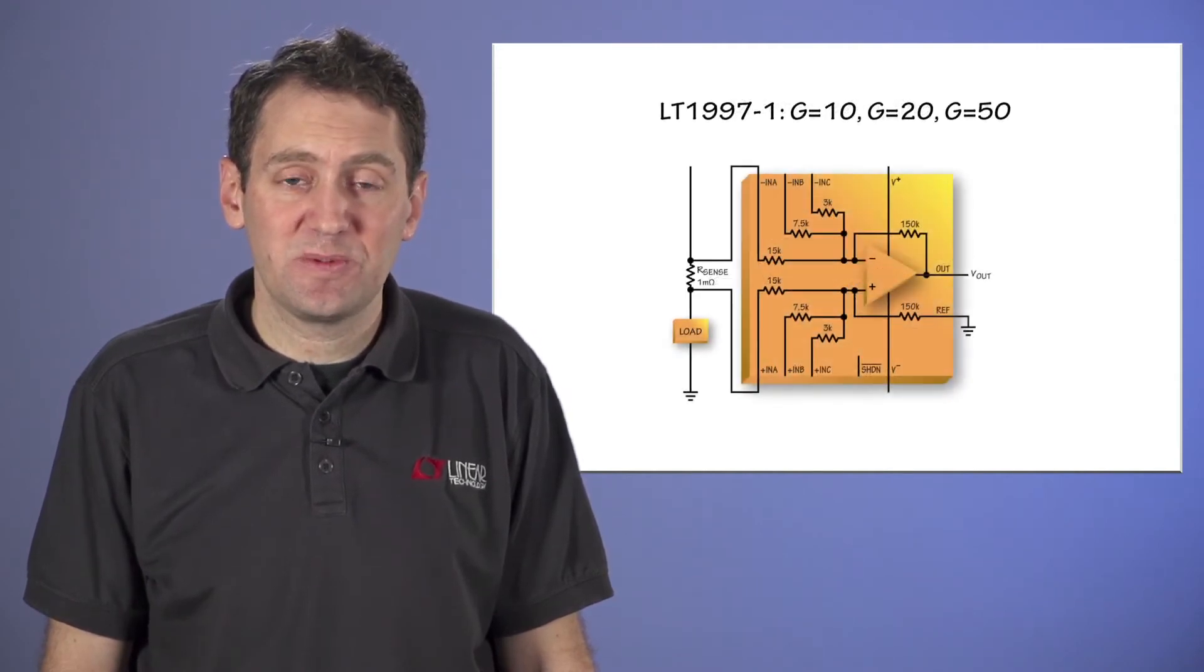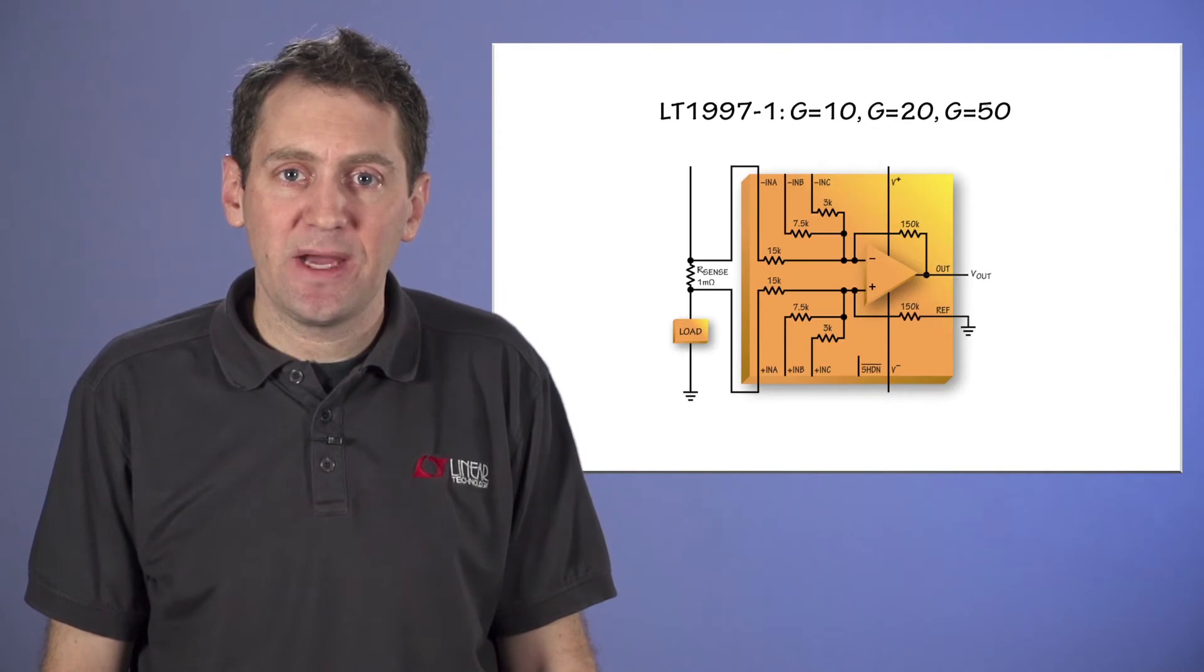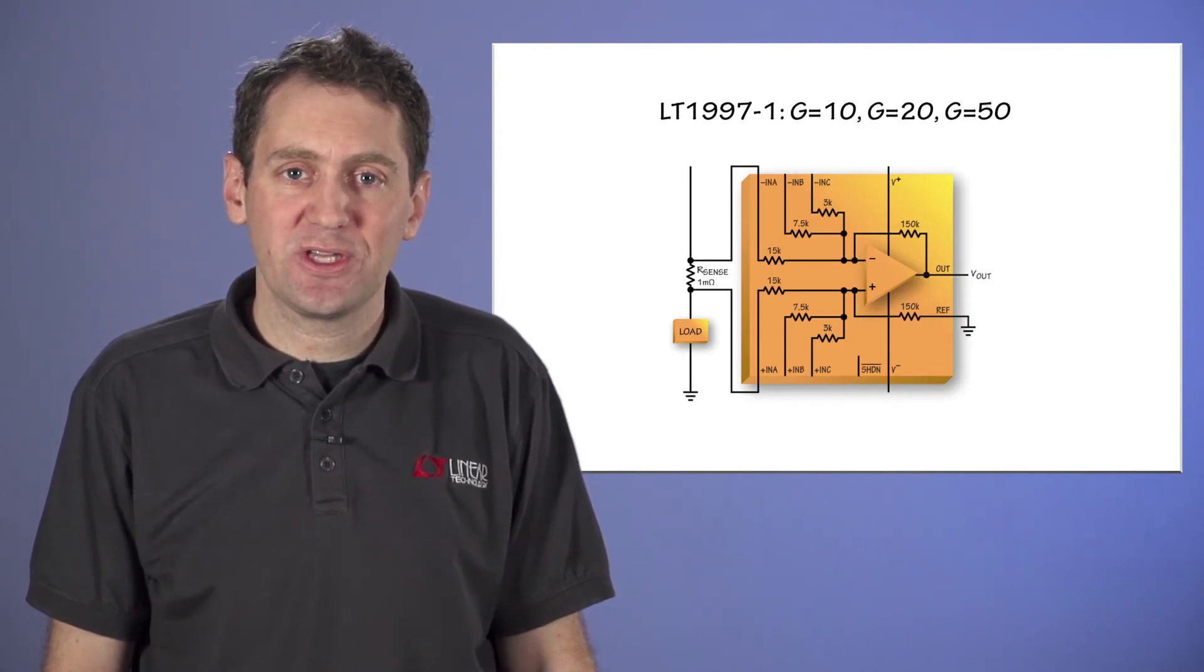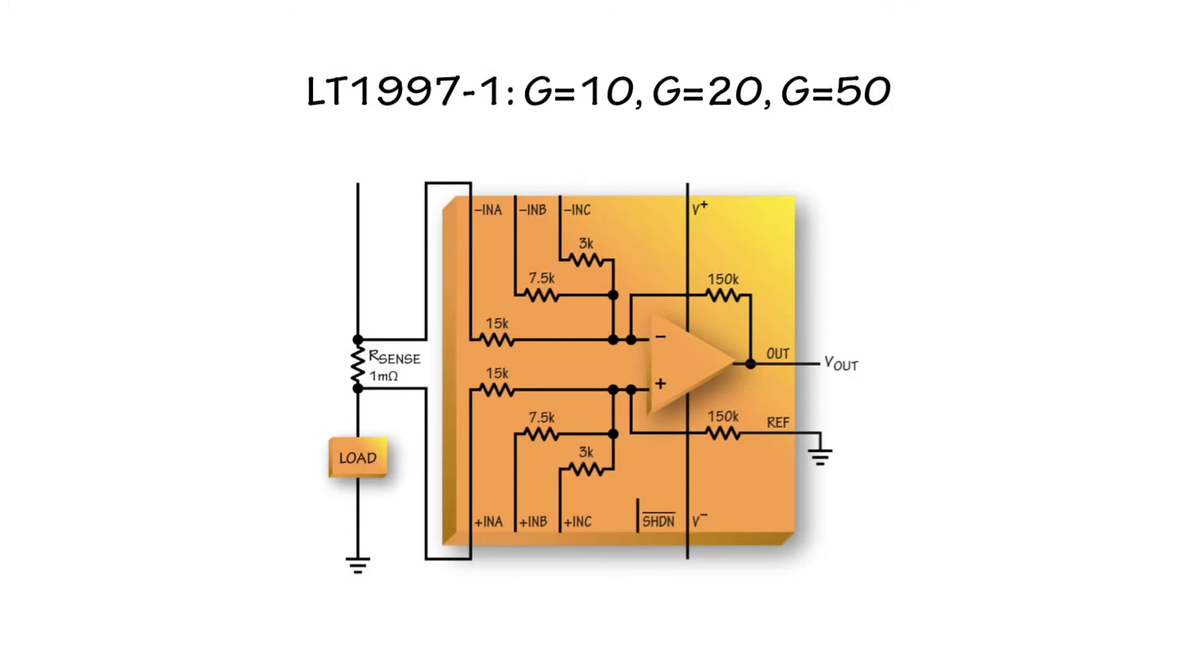Now let me show some specific examples. The LT1997-1 combines an op amp with a set of precision feedback resistors all on the same die. It is meant to be used as a difference amplifier. Depending on which set of pins you connect to the source, you can select gains of 10, 20, or 50.